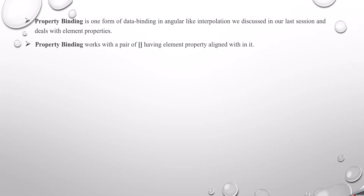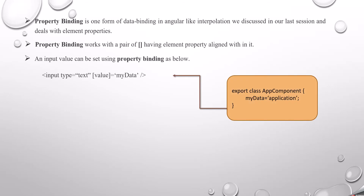Property binding works with a pair of square brackets having the element property inside them. An input value can be set using property binding. As you can see in the diagram, 'myData' is a variable from the component TypeScript file. We are rendering it to the 'value' property. We write it as [value]="myData". We'll also see how interpolation and property binding both work.